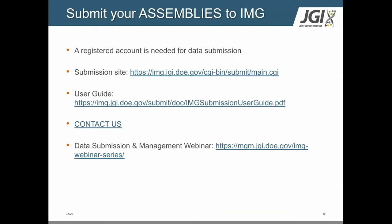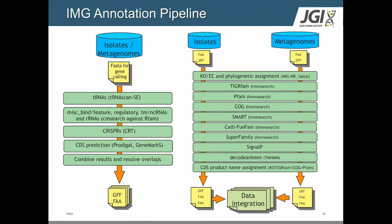Beyond JGI sequence data, we also encourage people to submit their own metagenomic data. Whether it was sequenced by the JGI or not, we do accept submissions within IMG of external data. As an external submitter, you might have assembled something in KBase, for example — you can submit those assemblies to the IMG annotation pipeline. Here are some details about what you would need in order to do that, along with a schematic of the IMG annotation pipeline.